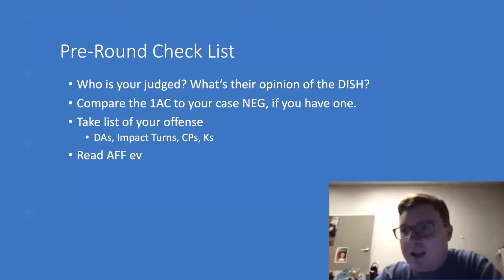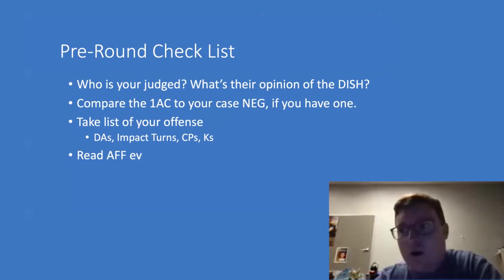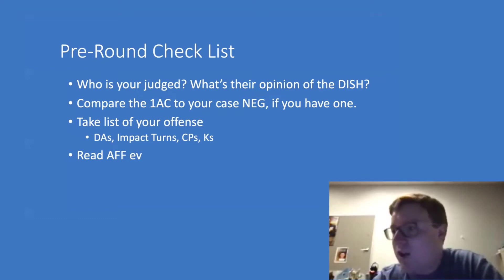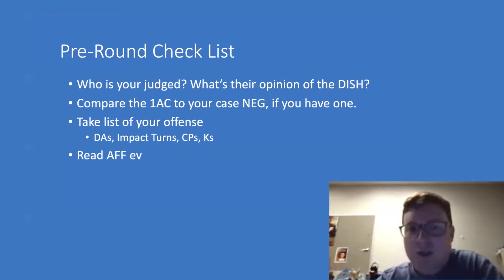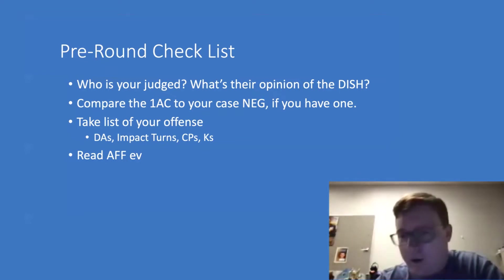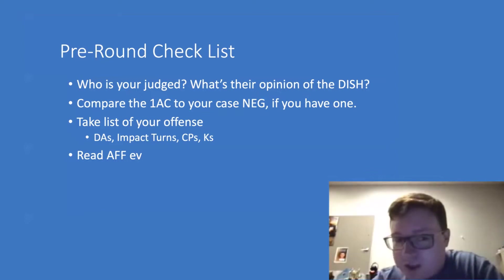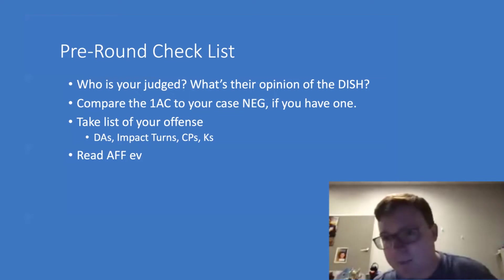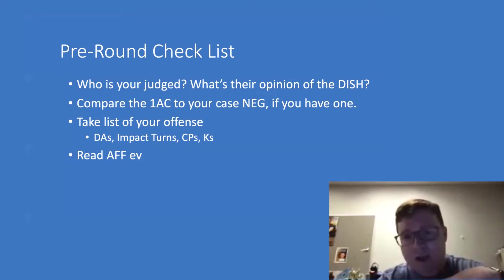You're going to walk into a round and be like, 'That's an aff I did not prepare,' or maybe some JV debater put the case neg together where they just cycled a camp file with nothing highlighted. So there are a lot of times you're going to be like, 'I don't have the goods' — maybe it's an advantage, maybe it's a new solvency mechanism. After you check the judge and check your case neg, take a list of your offense: what DAs do you have, do you have politics links, a topic DA, an industry DA? What are their advantages? Going through all of that is essential when thinking about fiat in a debate.